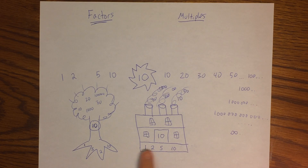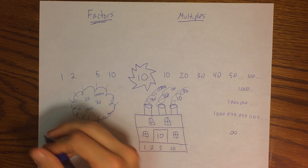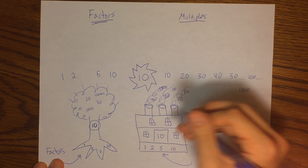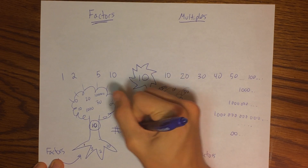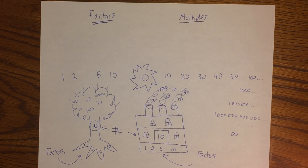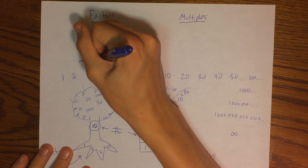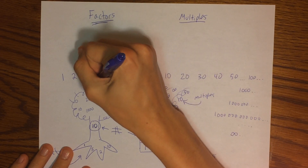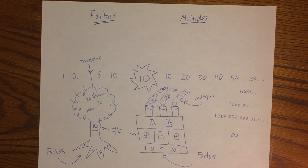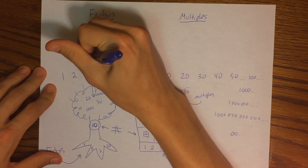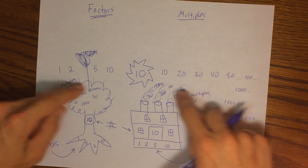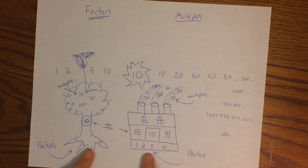So first I listed off the numbers, then I made some visual representations. Notice the factors in each representation are always lower than the number itself — the number is right in the middle. In both my visual representations the multiples were up high and kept going forever and ever. The factors are down below.